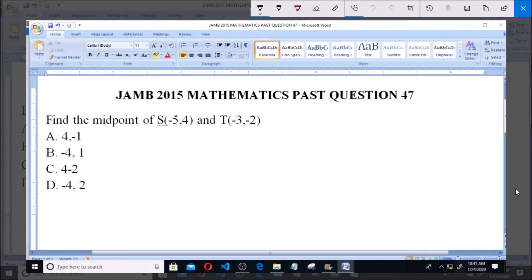Hello, good day and welcome. I'll be answering JAMB 2015 Mathematics past question 47. Find the midpoint of point S having coordinates of (-5, 4) and point T having a coordinate of (-3, -2).